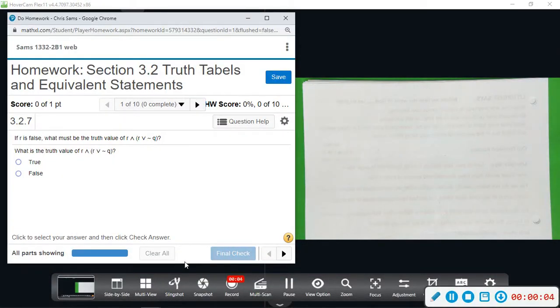Alright, number one in section 3.2. We're going to be going over truth tables and we see some of the same symbols that we saw in section 3.1. I want to give you the cliff notes on these symbols and determining truth value.